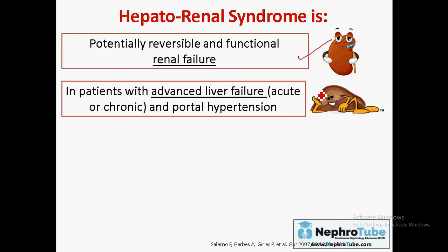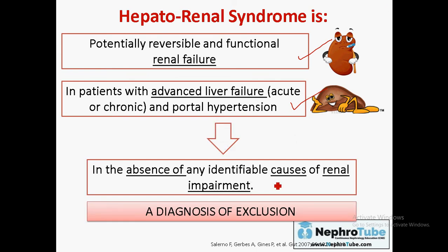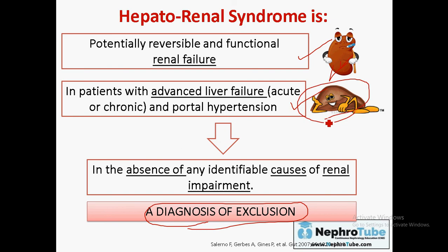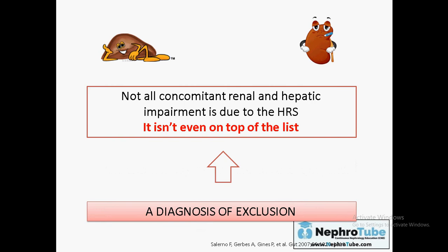Regarding hepatorenal syndrome — a general view — it is renal failure or renal impairment in the presence of advanced liver cirrhosis or advanced liver failure, in the absence of any other cause of renal impairment. So hepatorenal syndrome is a diagnosis of exclusion. We have to exclude all other causes of renal impairment in the presence of liver failure to diagnose hepatorenal syndrome.